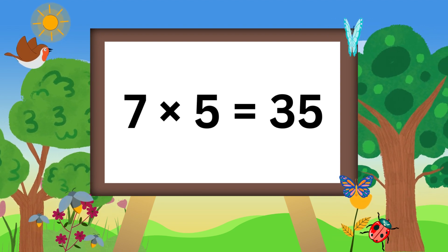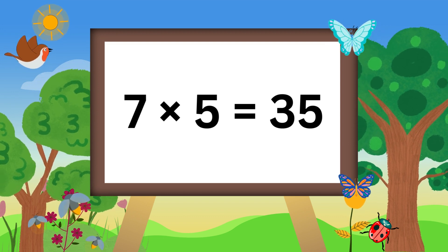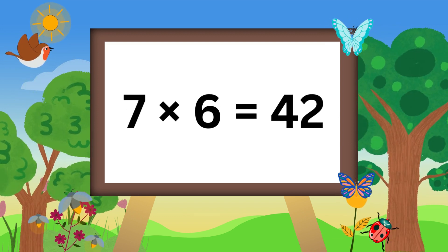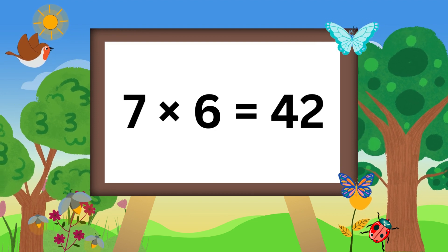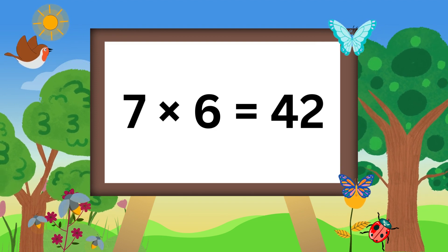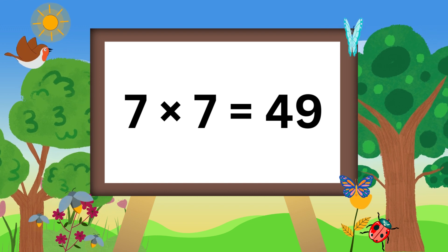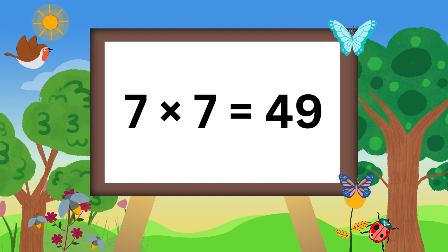Seven fives are thirty-five. Seven sixes are forty-two. Seven sevens are...